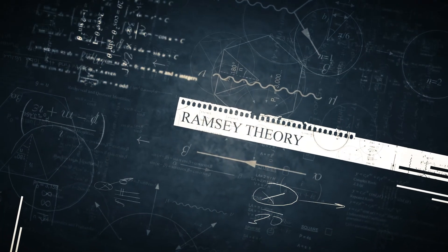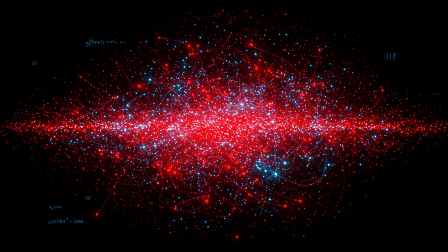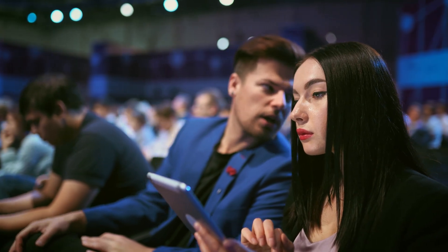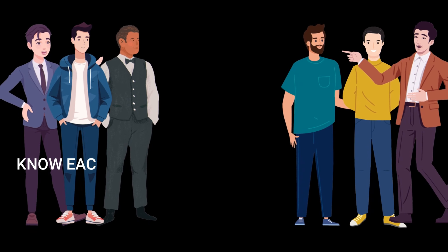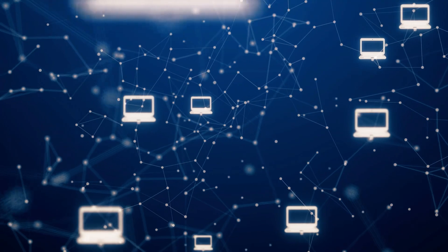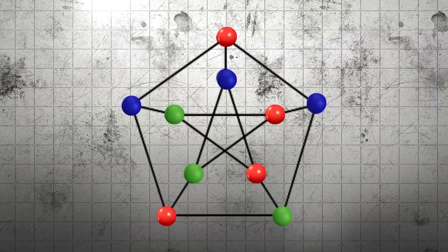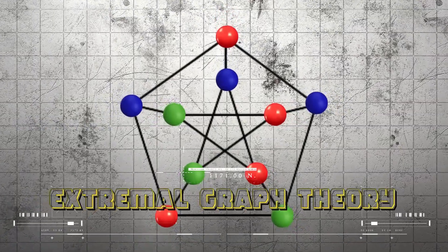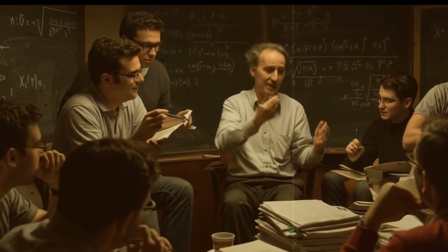One of Erdos's most groundbreaking contributions came in the form of Ramsey theory. The idea that no matter how chaotic things seem, some hidden structure must always emerge. Imagine taking a room full of people. If you pick six of them at random, no matter what, you'll always find either three who all know each other, or three who are total strangers. This mind-blowing principle extends into everything: networks, computer science, even the internet. Erdos and his collaborators laid the foundations for extremal graph theory, giving birth to some of the most important principles in modern mathematics. But Erdos didn't just want to solve problems, he wanted to solve them together.